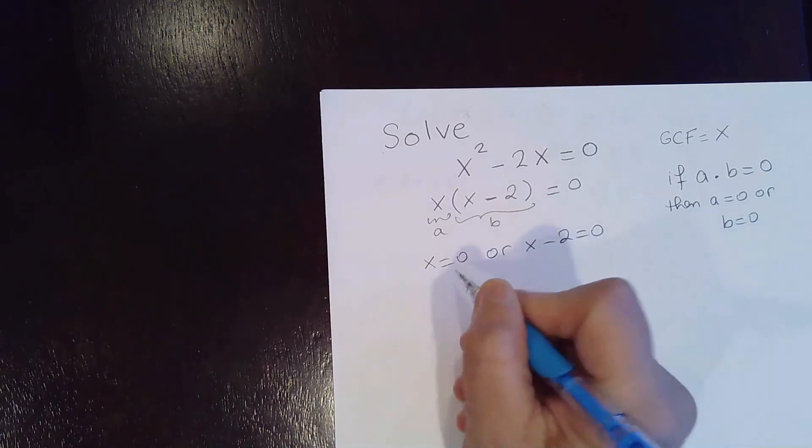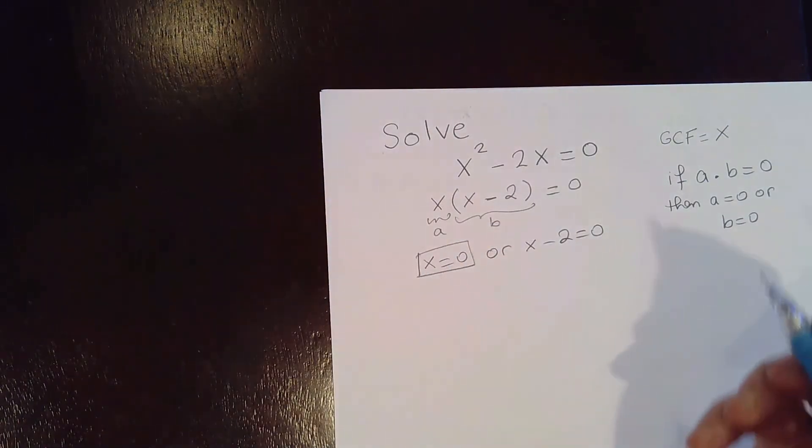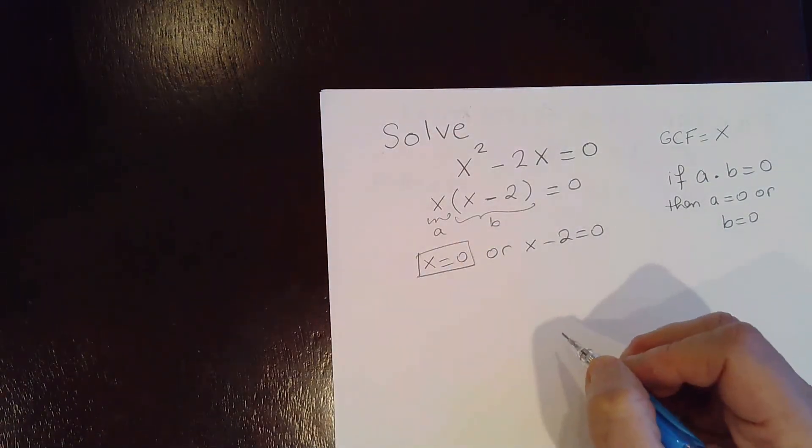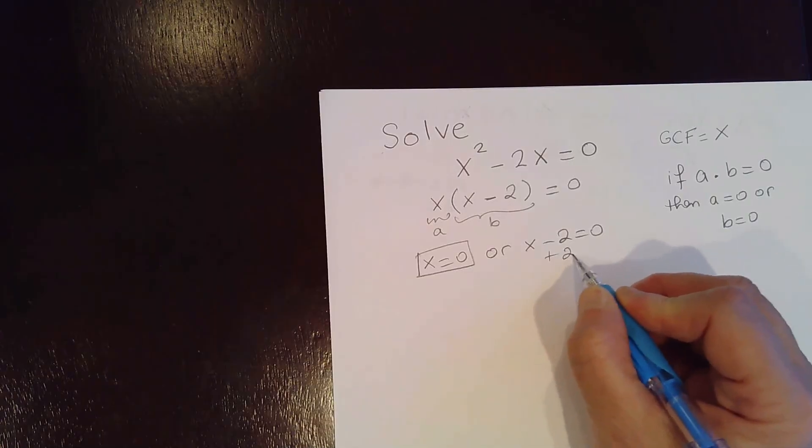Now, x equal to 0, that's already solved. The variable is already solved. Here we need to solve for x, so we need to add 2 on both sides of the equation.